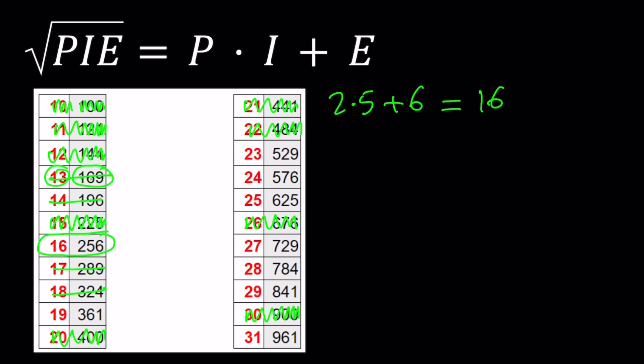19 squared is 361. 3 times 6 plus 1 is going to be 19. And yay, we got another solution. Nice.